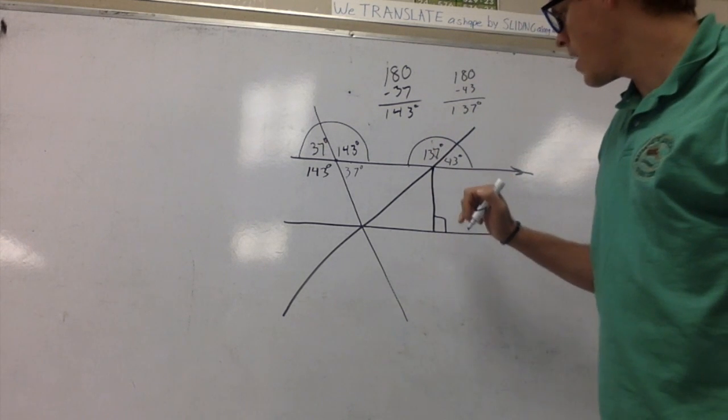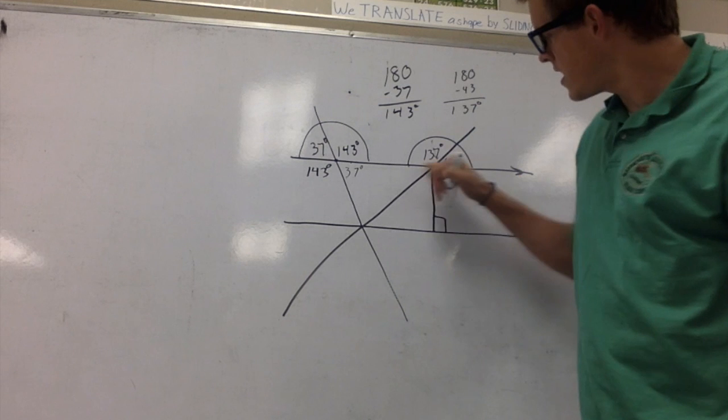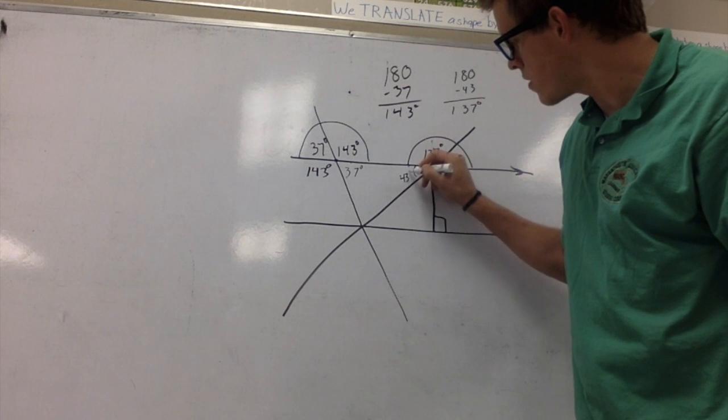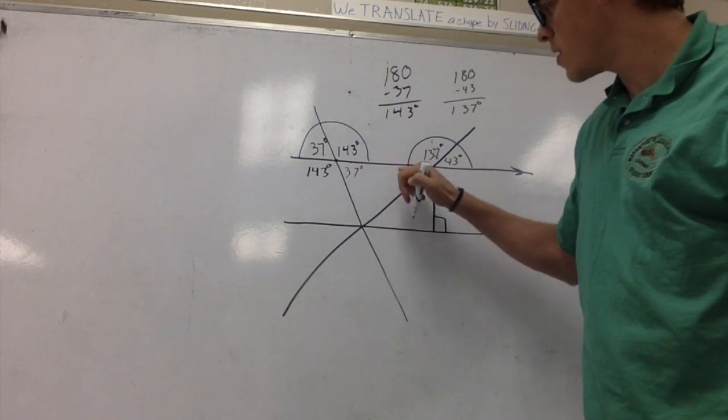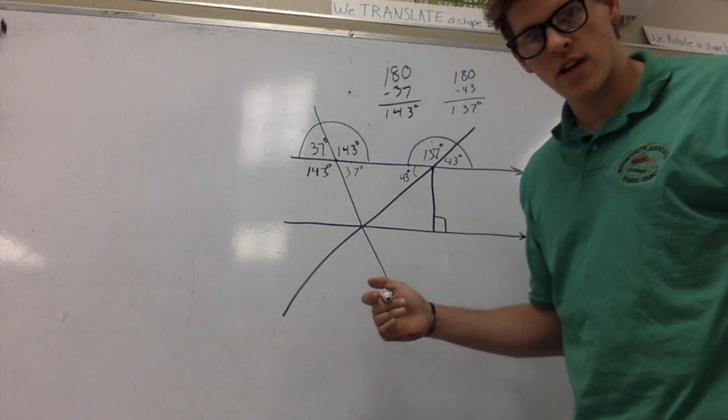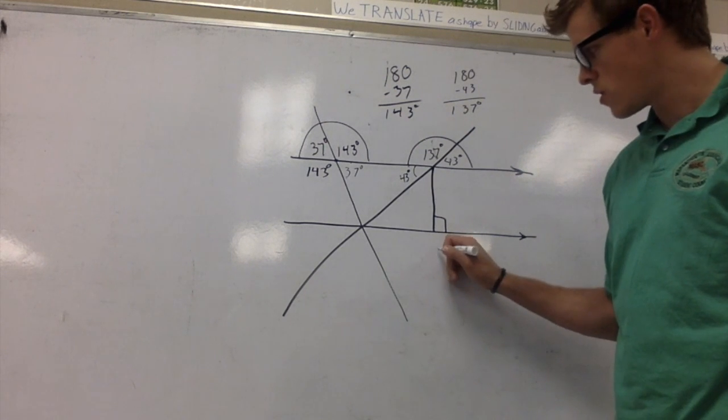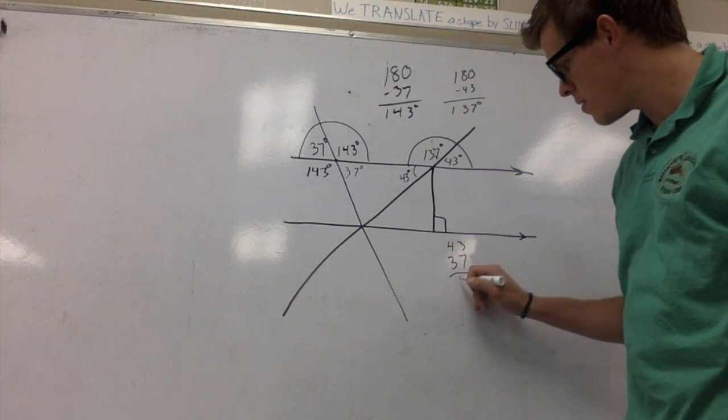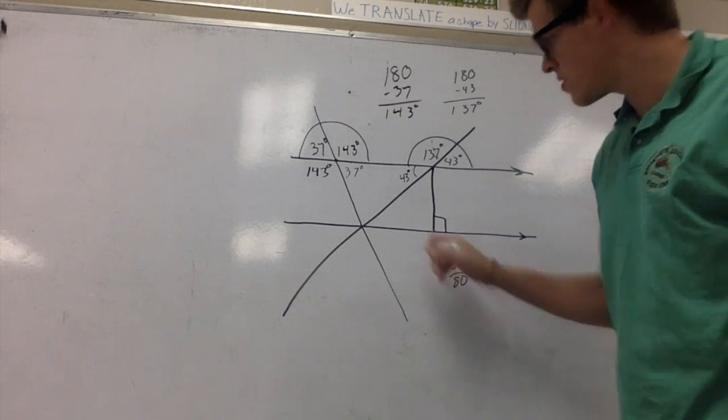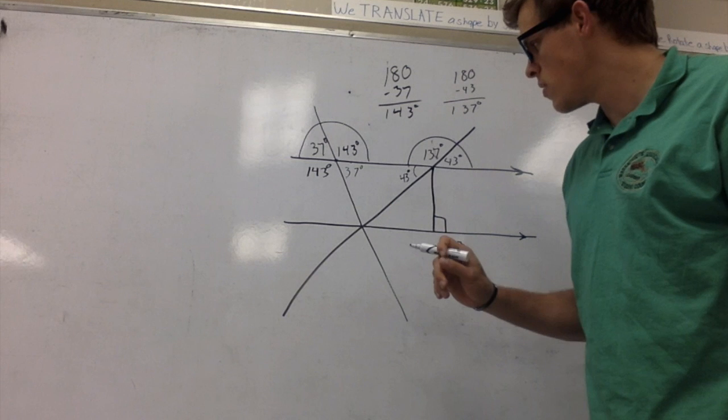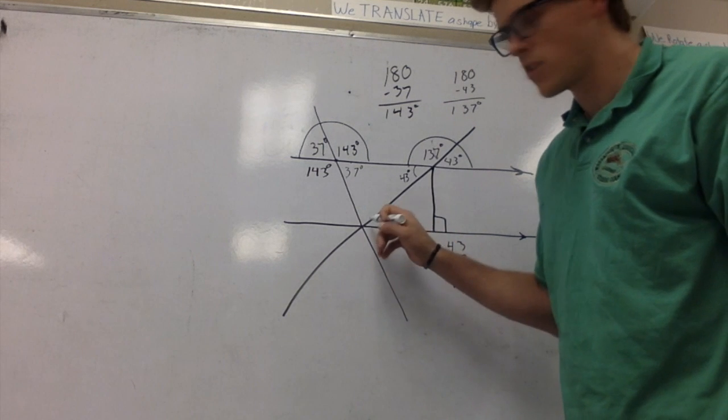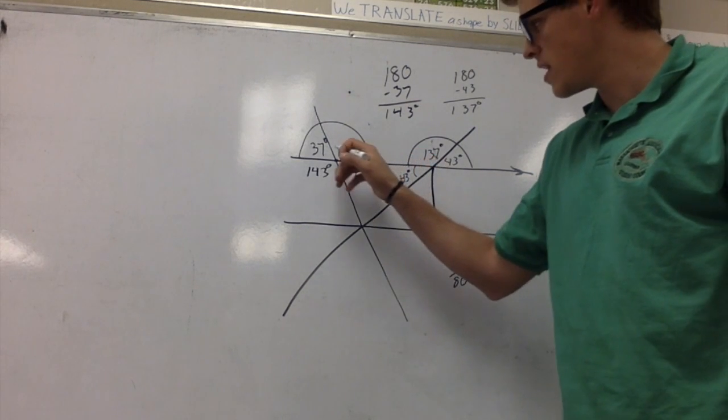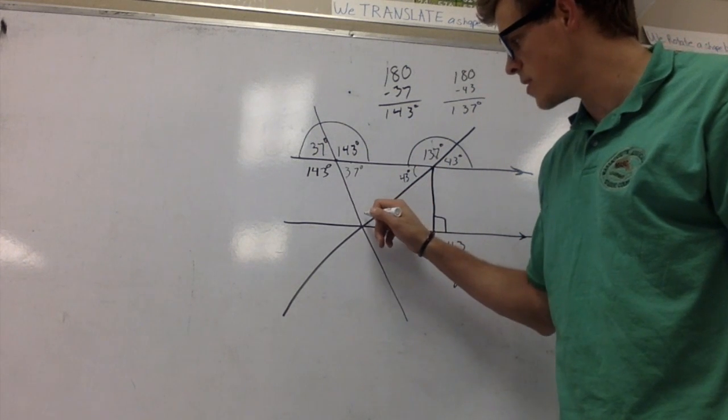I can see right here is going to be vertical to here, so this is going to be 43 degrees. And right here, we know this is a triangle, so there's 180 degrees in a triangle. 37 and 43 make up 80 degrees exactly. We know that this looks like it's less than 90, but assuming that these are correct, this would be 100 degrees.